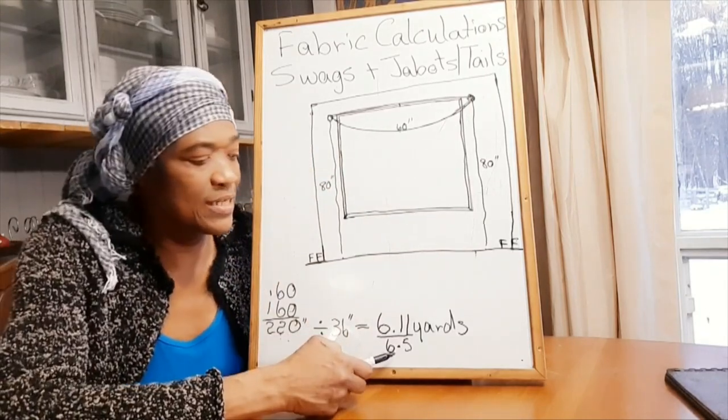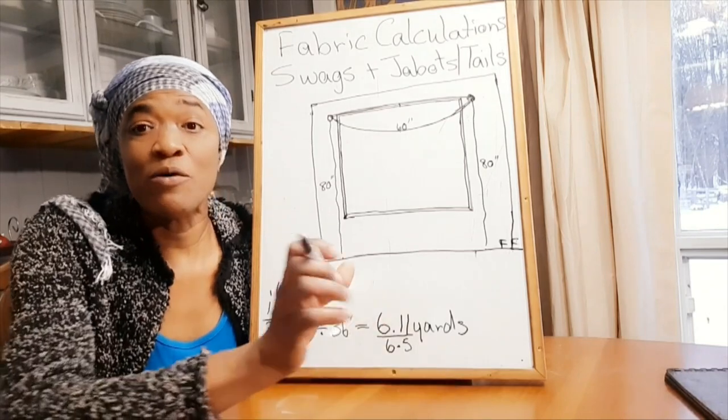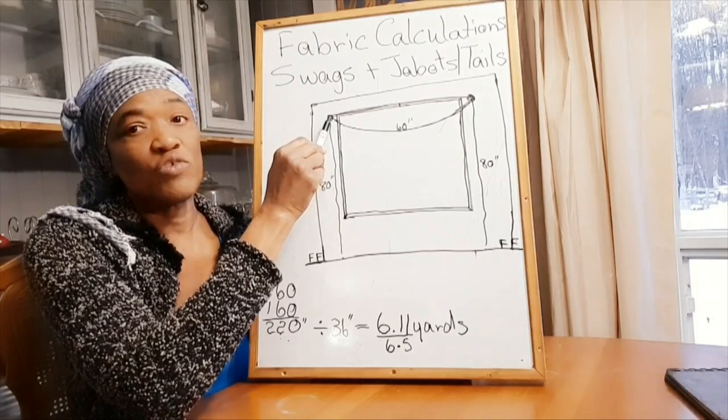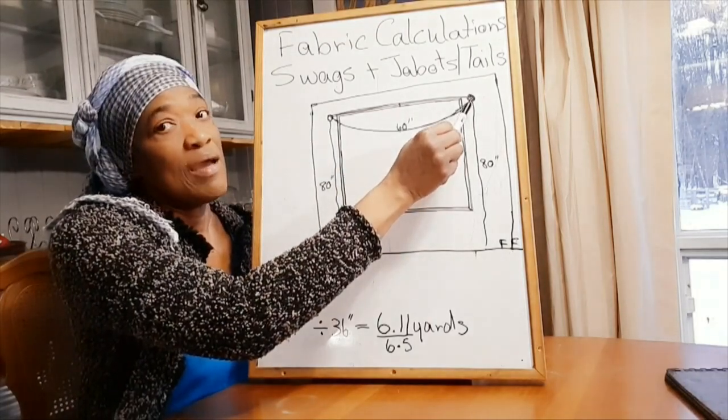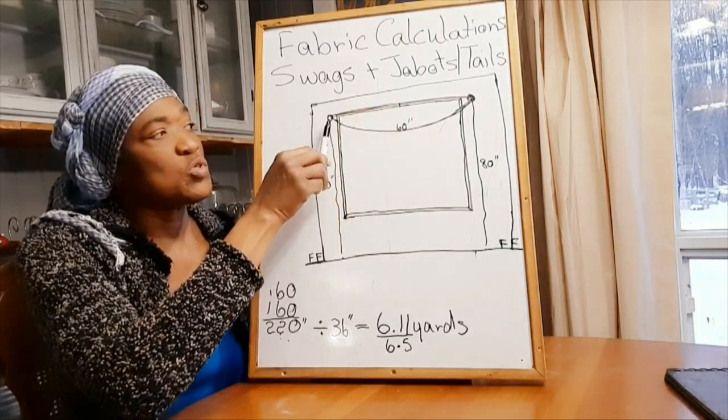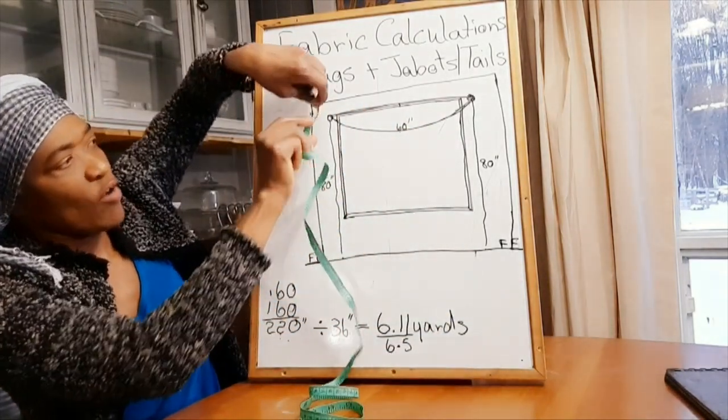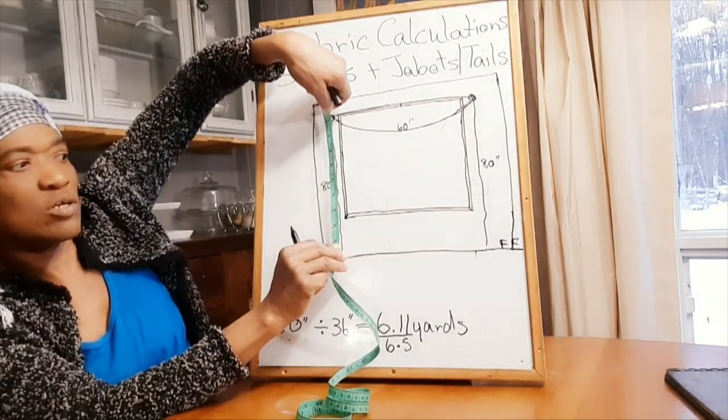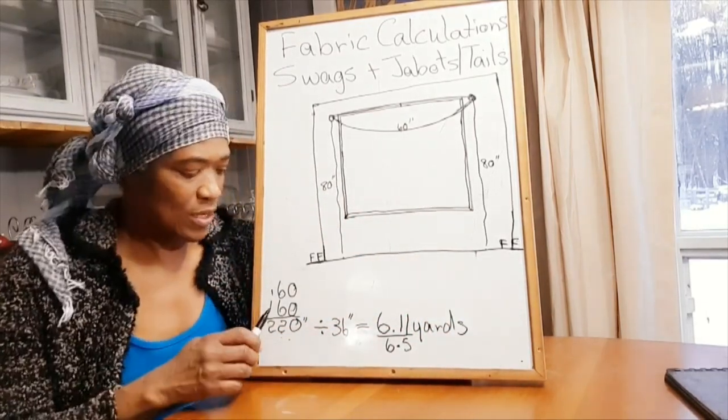Now if you don't have enough string, what you could do is take your string from your bracket here to your bracket here, and then use your measuring tape to basically drop down from where you have your bracket to wherever you want your tail to stop.